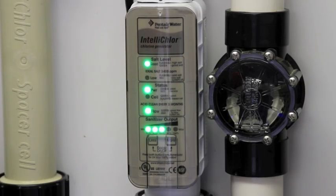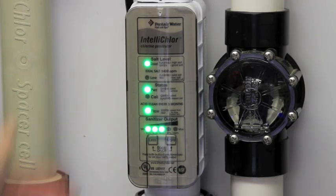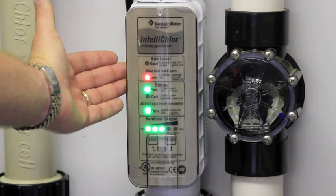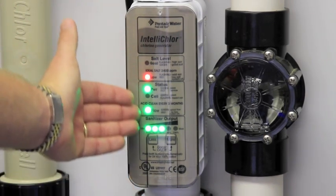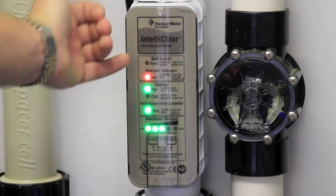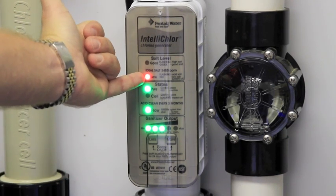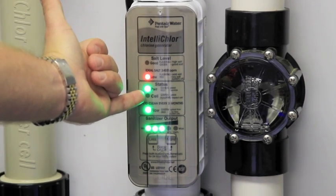IntelliChlor operation is very simple. The unit here that's installed in-line into your plumbing has a series of red and green lights. Red lights would show any error, such as low salt or low flow.